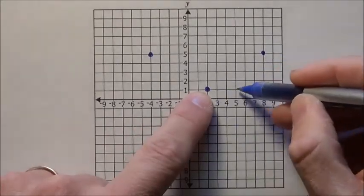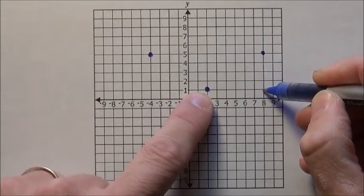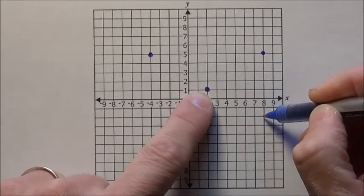Coming downwards, if this is in the middle, I could go down 1, 2, 3, 4. So 1, 2, 3, 4.